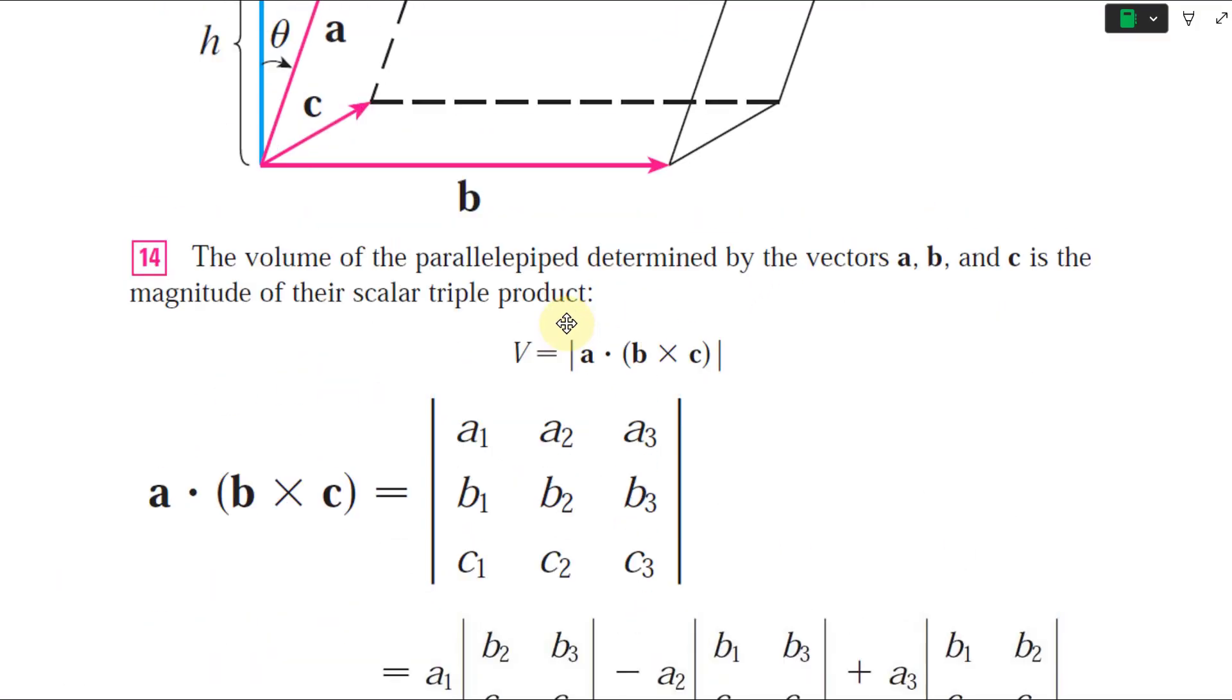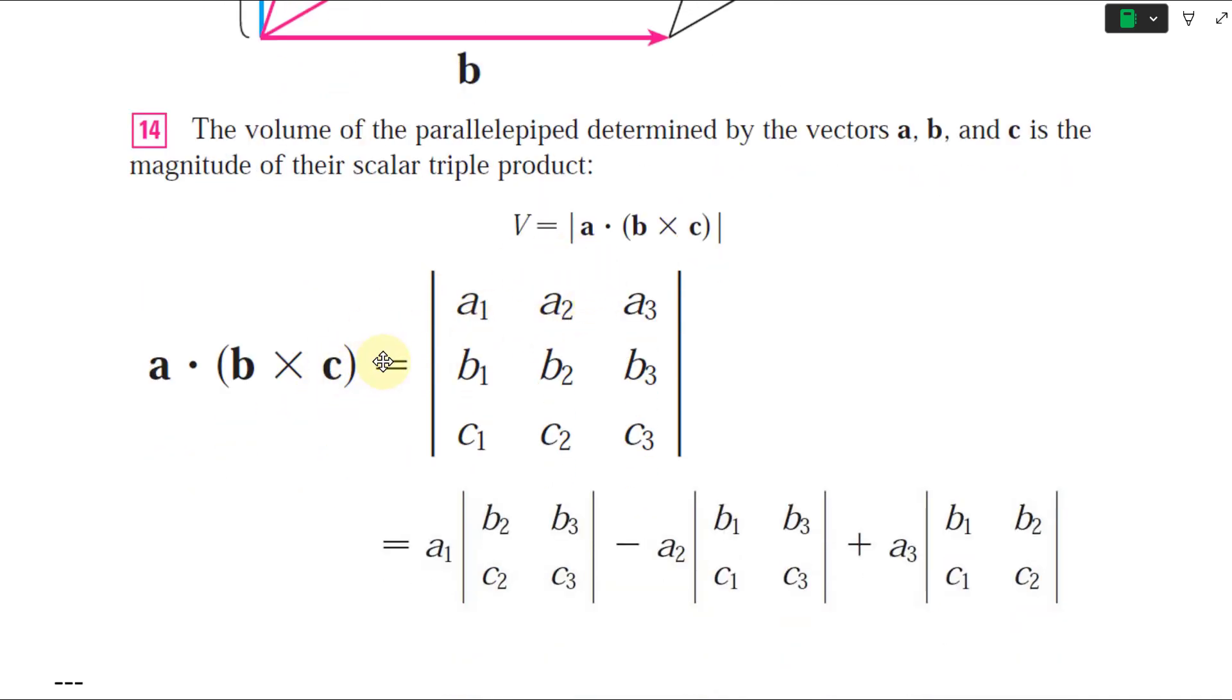And note that it's called scalar triple product because the result gives a scalar or just a number, as opposed to the cross product which just gives a perpendicular vector. And also here is the determinant form of this triple product. And you could write it exactly the same way as with a cross product. But instead of the standard basis vectors i, j, k, you could just use A1, A2, A3.